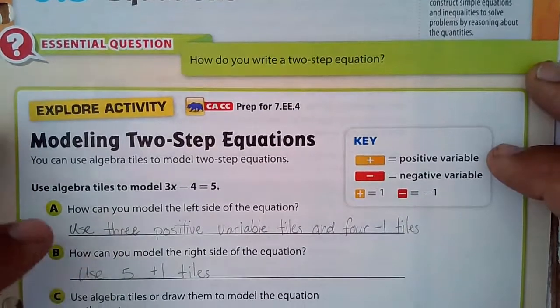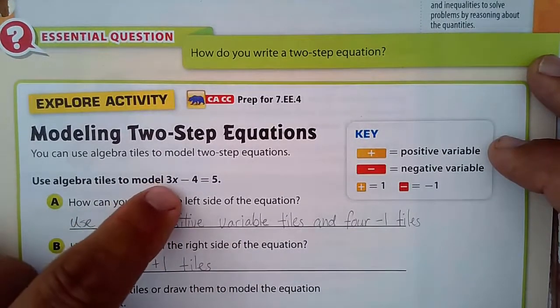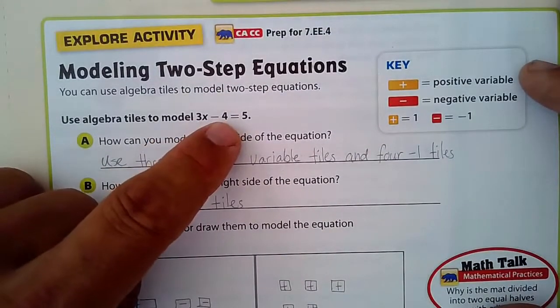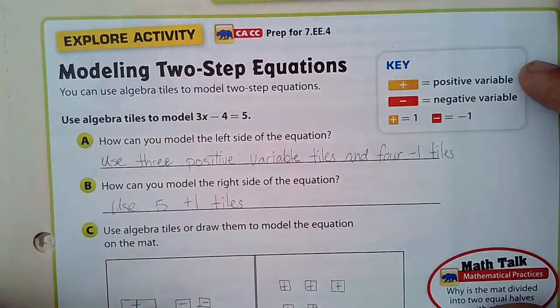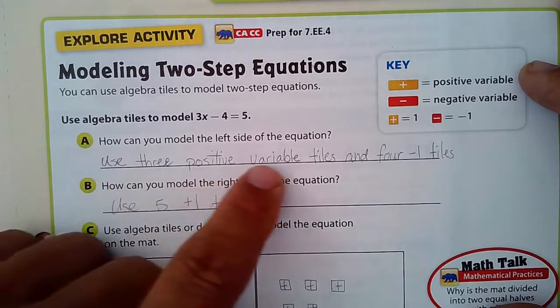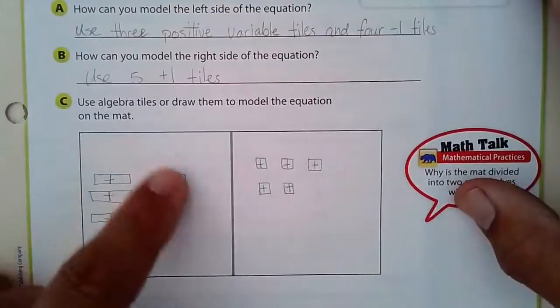So using algebra tiles, how can you model this? We have three positive variable x, so three times that, so three of these. And in here I have three of them right there. And then minus four, so that represents plus a negative four, so you're adding four negatives. There are one, two, three, four negatives.